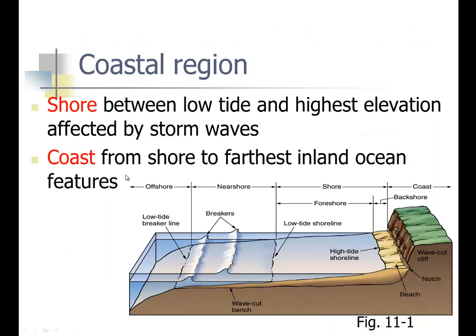Coastal regions are basically made out of shore, which is the area between low tide and the highest elevation affected by storm waves, and we have the coast, which is the shore to the farthest inland feature. So we have offshore, nearshore, and then the coast, which goes up to a wave-cut cliff that was affected by the ocean at some point.